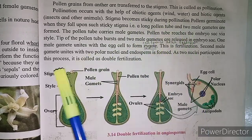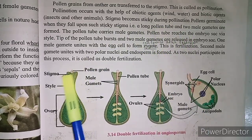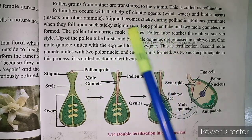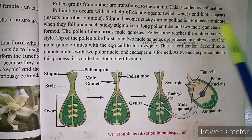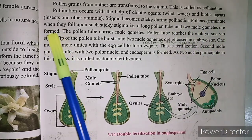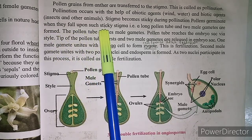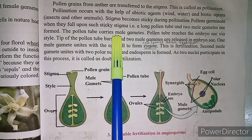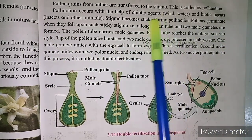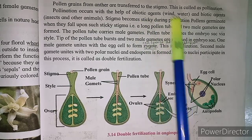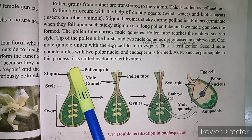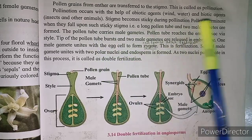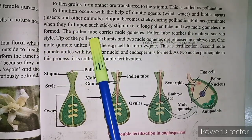During pollination the stigma becomes sticky, and because of this stickiness, pollen grains are attracted to it. Pollen grains germinate when they fall upon the sticky stigma — they mature and form a pollen tube. The pollen tube carries male gametes.